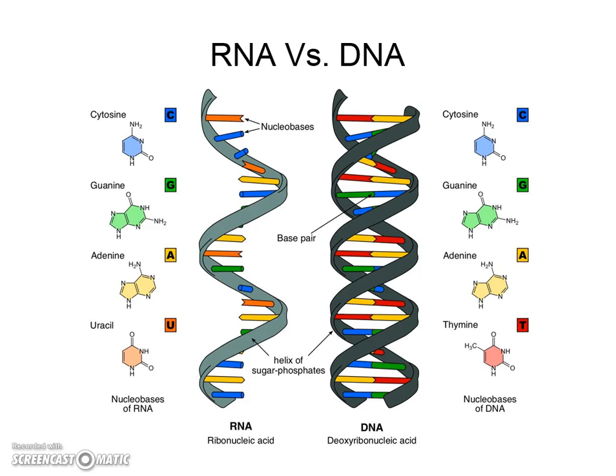RNA is a message. It is a shorthand version of DNA. It is able to leave the nucleus, unlike DNA which has to stay in the nucleus. Think about DNA as the most prized possession in the library — the book that cannot leave. If you want to write down instructions from the book, you jot it down, kind of like RNA is only half the message. Whenever RNA is created using DNA, it acts as a template and uses base pairing rules: A, U, C, and G.